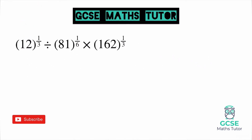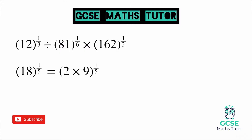Before you have a go at solving this question, let's have a look at an idea around this question. Rather than the numbers in the question, consider something like 18 to the power of a fifth, and think about how we could write that in a different way. Instead of writing 18, because we can't do the fifth root of 18, maybe we could write it as 2 times 9, all to the power of a fifth. This allows us to break down the number.